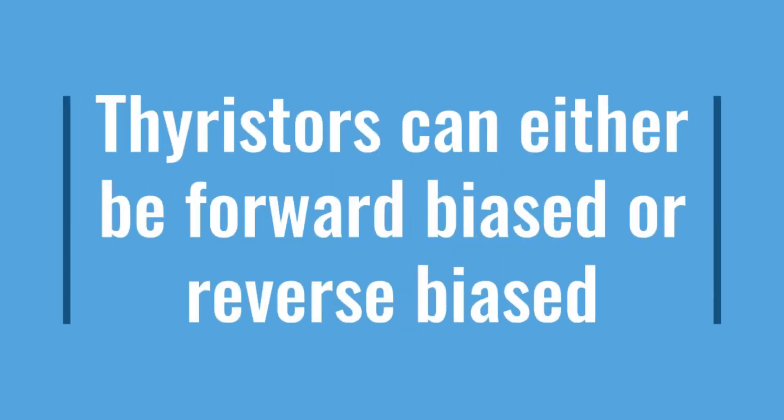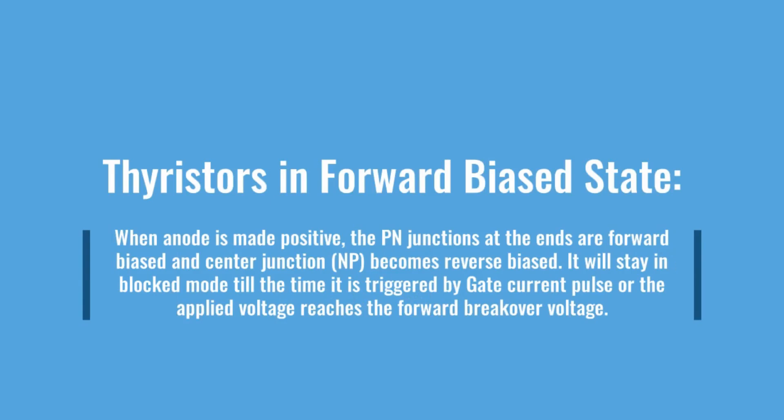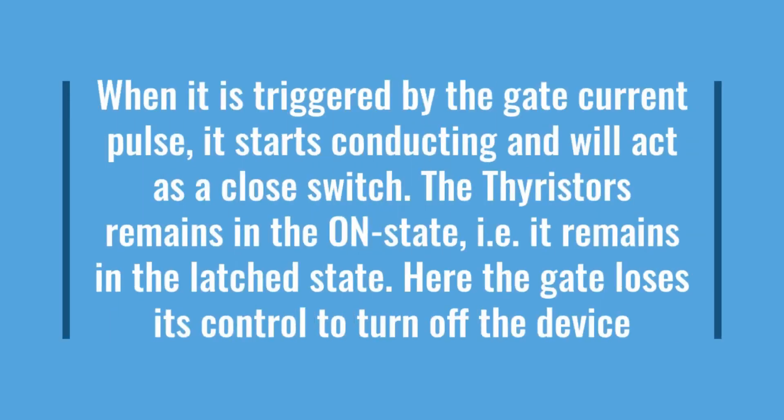Thyristors can be either forward biased or reverse biased. In the forward biased state, when the anode is made positive, the PN junctions at the ends are forward biased and the center NP junction becomes reverse biased. It will stay in blocked or off mode — also known as the forward blocking stage — until triggered by a gate current pulse or until the applied voltage reaches the forward breakover voltage. When triggered by the gate current pulse, it starts conducting and acts as a closed switch, remaining in the latched on state.